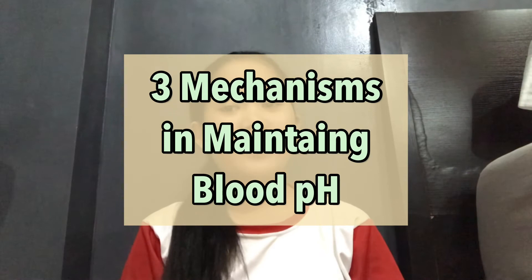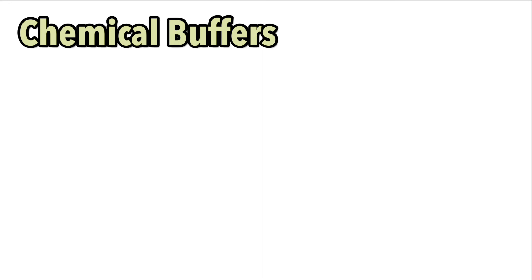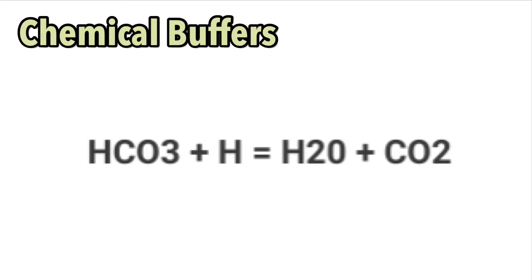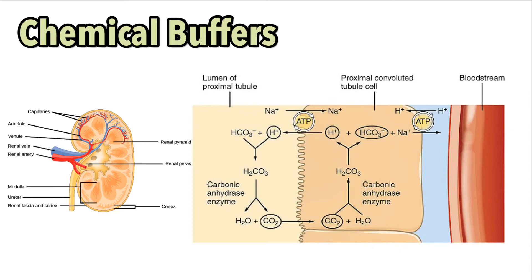There are actually three mechanisms the body uses to maintain blood pH: chemical buffers, pulmonary regulation, and renal regulation. The most important chemical buffer is bicarbonate. The body uses bicarbonate to perform a chemical reaction with strong acids and bases on a regular basis. The hydrogen ion binds to the bicarbonate, leaving the reaction with water and carbon dioxide, which can easily be eliminated by breathing and urination. This reaction can also be reversed if more hydrogen ions are needed to be released into the blood to make it more acidic. The kidneys aid in this process by releasing bicarbonate when needed.